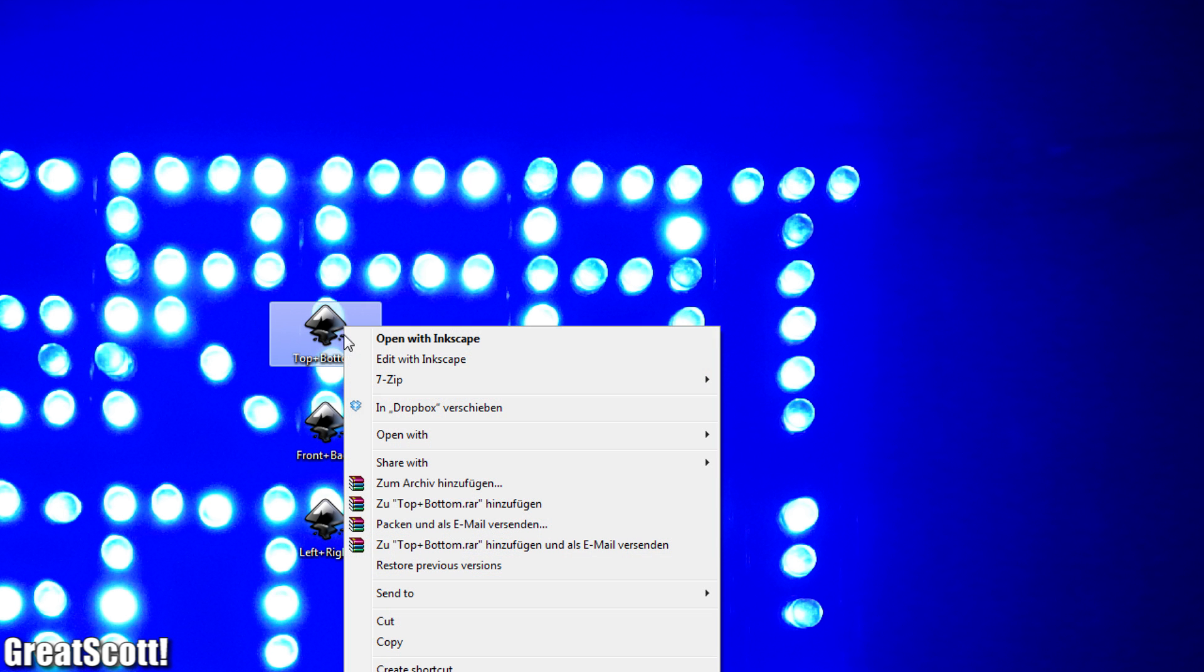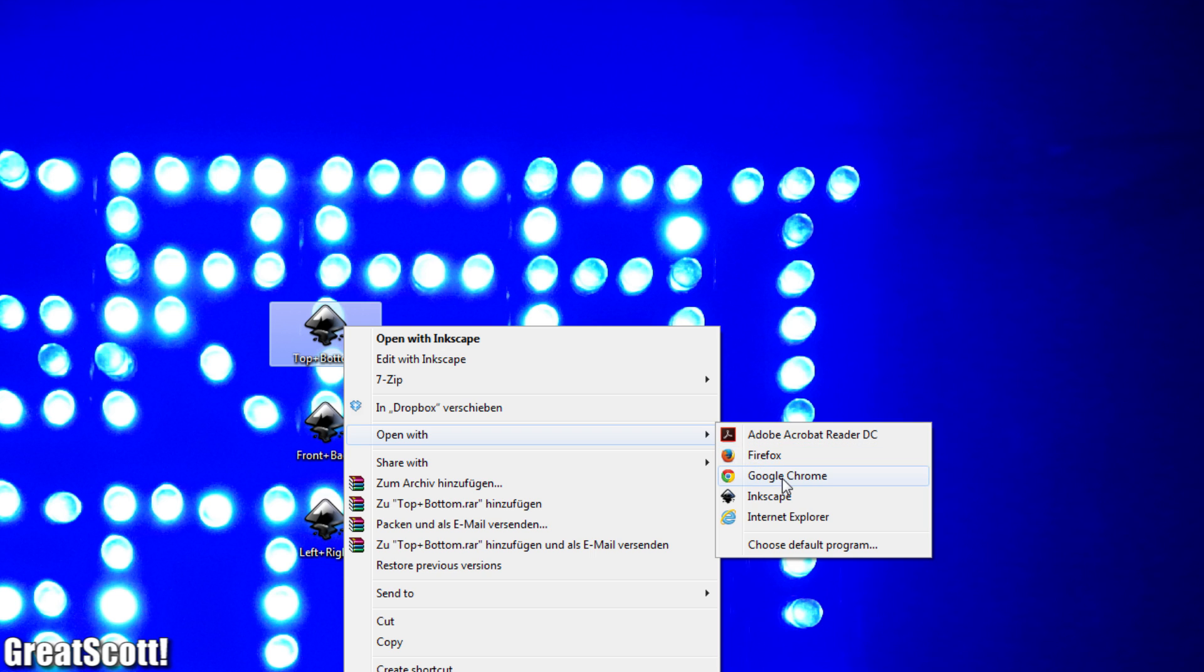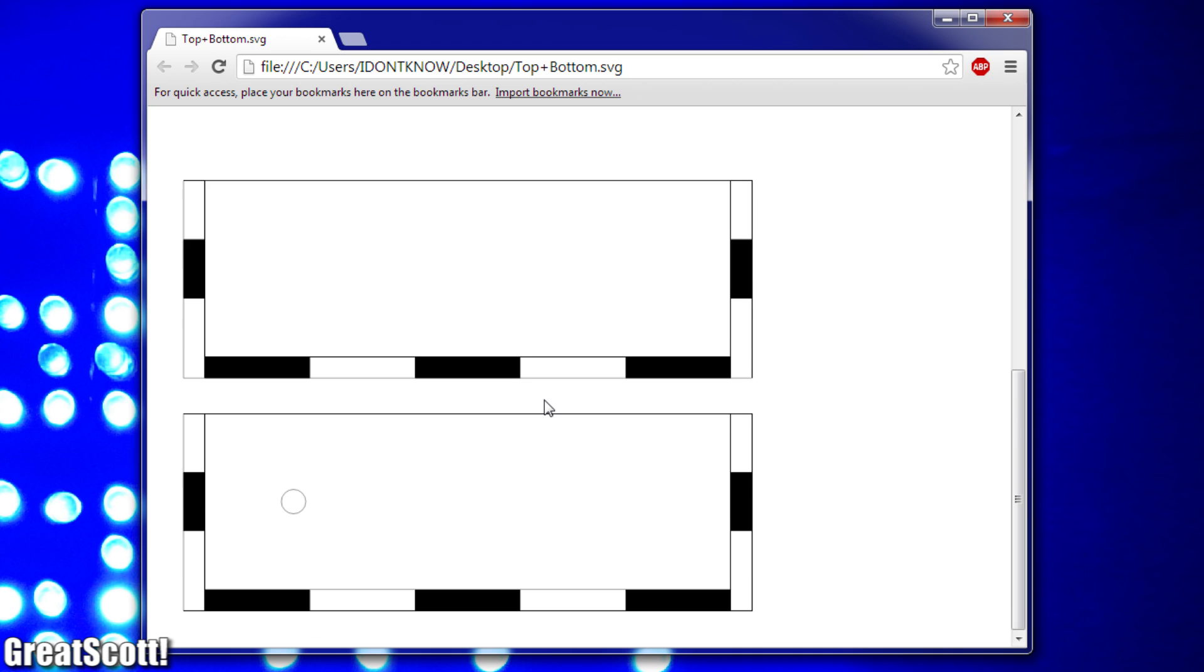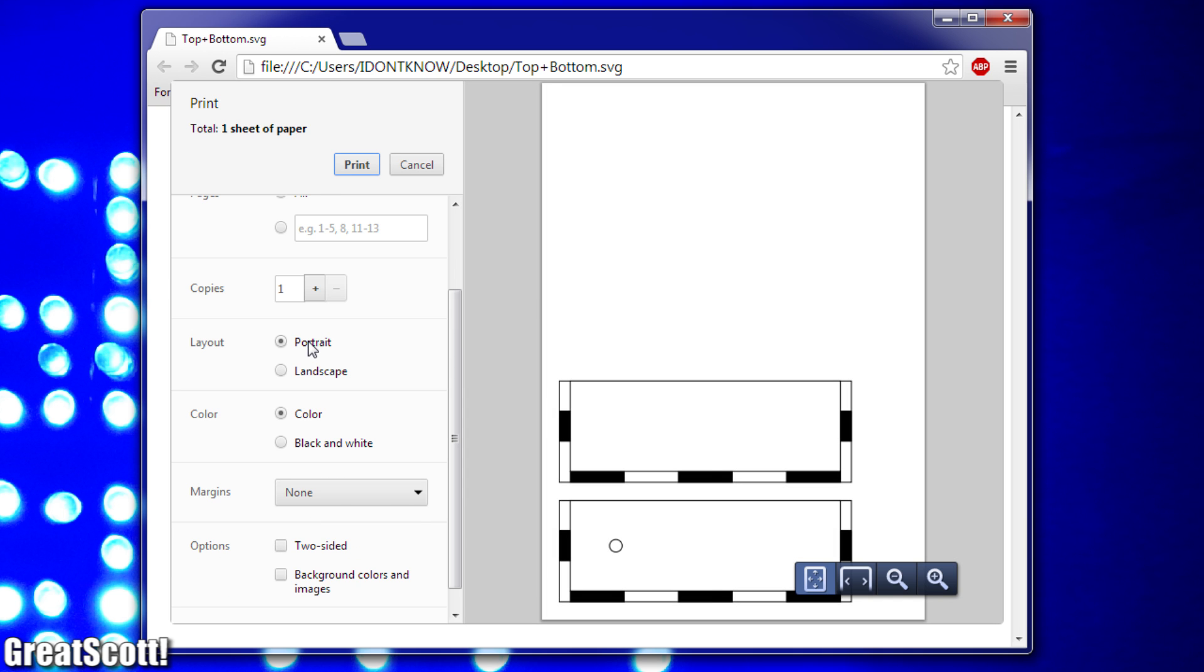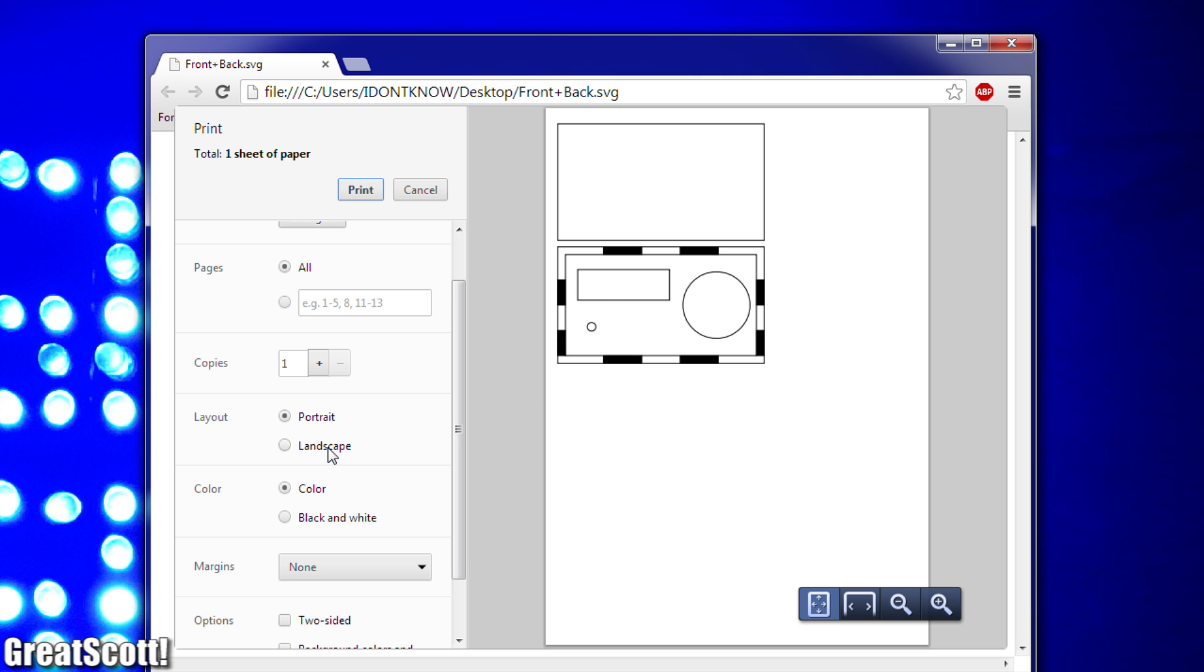Once the design sketch was finally complete I used Google Chrome to open the SVG files and printed the left, right, top and bottom piece as a portrait and the front and back piece as a landscape.